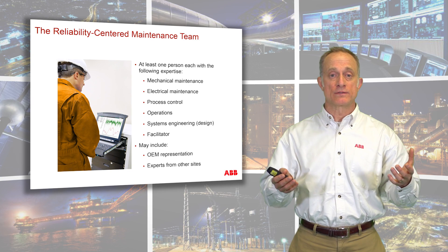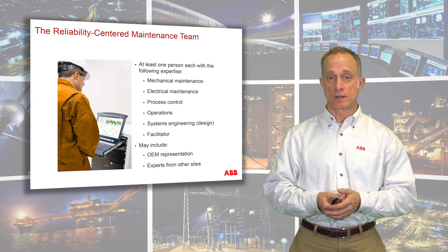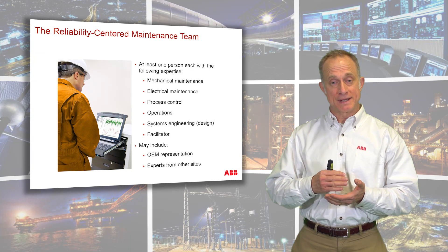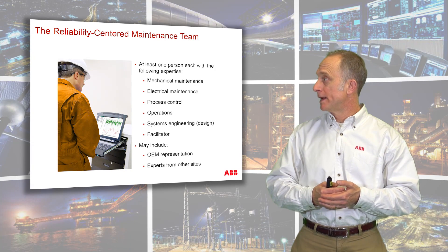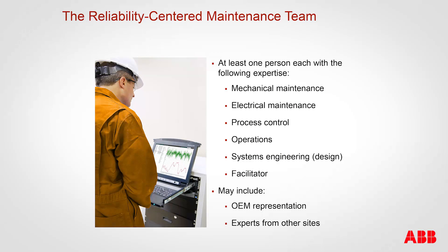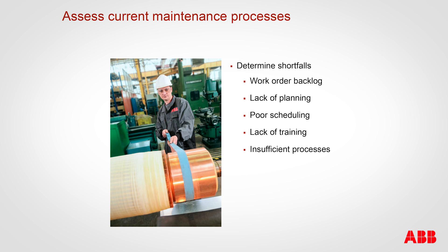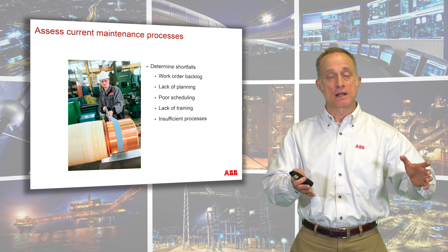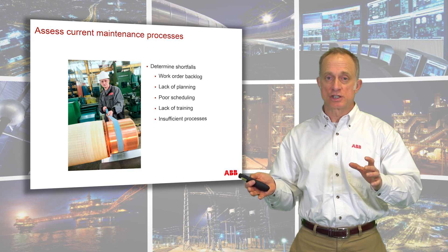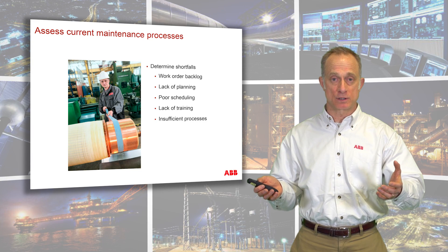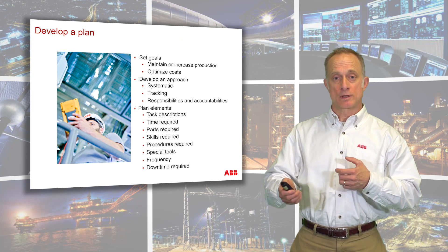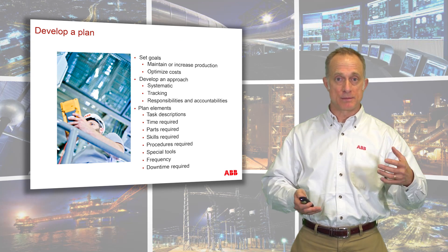Now we'll talk briefly about how a plant would actually implement reliability centered maintenance. First, you want to make sure you have a cross-functional team that includes mechanical maintenance, instrumentation, electrical maintenance, process control, operations, systems or plant engineering, and perhaps a facilitator. You'd also want to understand your current maintenance processes — after doing the criticality analysis and failure modes and effects analysis, you might have identified areas where your processes wouldn't allow you to effectively act on the recommendations you just put together.